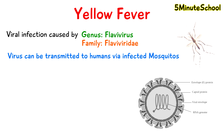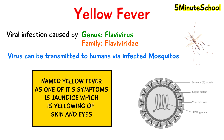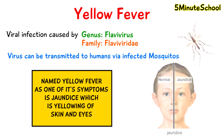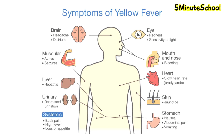The reason this viral infection is named yellow fever is because one of the symptoms of it is called jaundice, which is where we have yellowing of the skin and eyes. Other symptoms also include having a headache, fever, muscle pain, nausea, vomiting, and also fatigue.